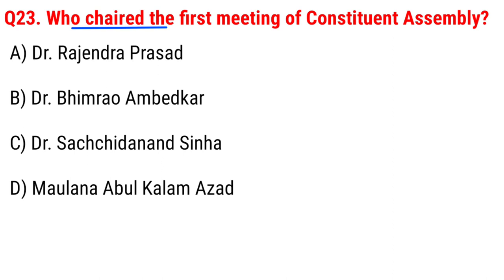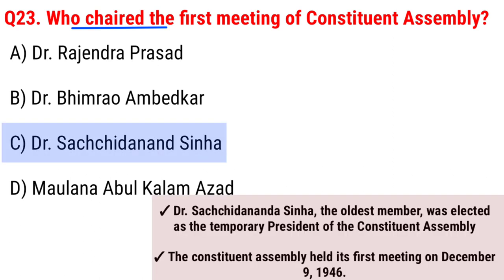Who presided at the first meeting of the Constituent Assembly? Option A, Dr. Rajendra Prasad; B, Dr. Bhimrao Ambedkar; C, Dr. Sachidananda Sinha; D, Maulana Abul Kalam Azad. The right answer is Option C, Dr. Sachidananda Sinha. Dr. Sachidananda Sinha, the oldest member, was elected as the temporary president of the Constituent Assembly. The Constituent Assembly held its first meeting on December 9, 1946.